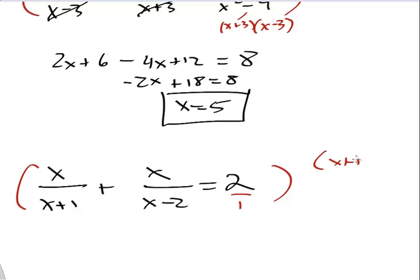x plus 1, x plus 1, and an x, excuse me, and a x minus 2. If I put that on the left-hand side, if I multiply this to the left-hand side, you're going to get 2 times x plus 1 times x minus 2.